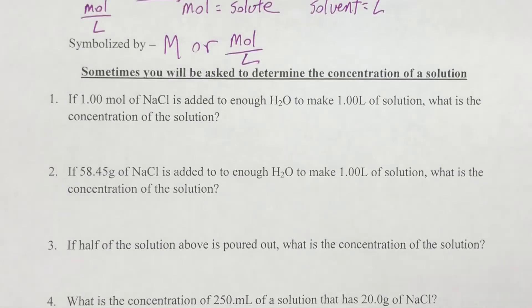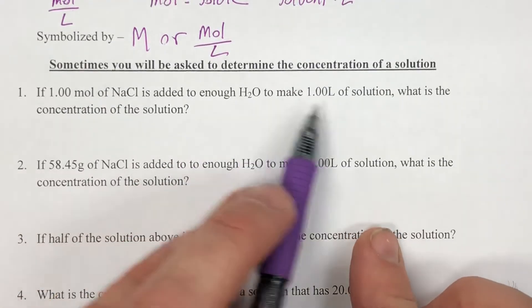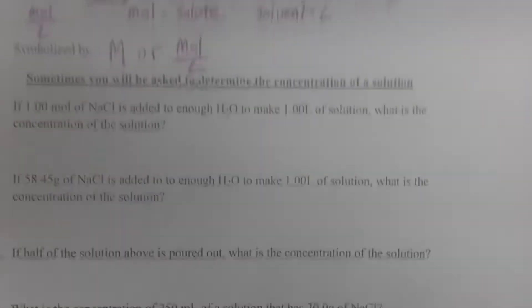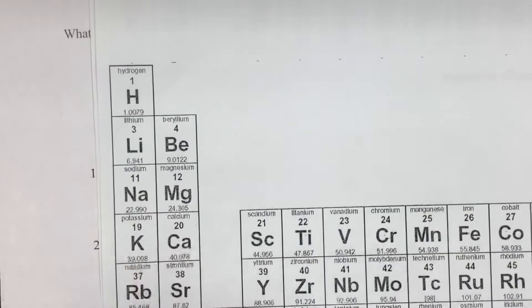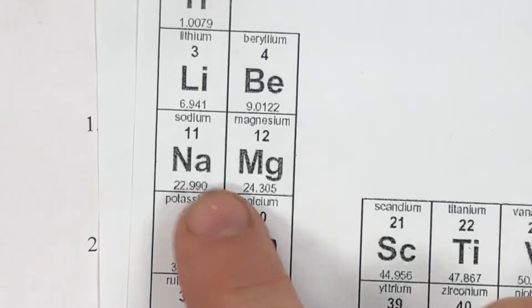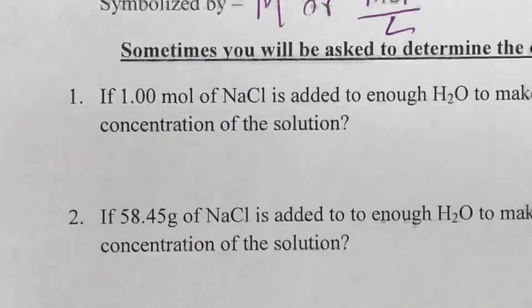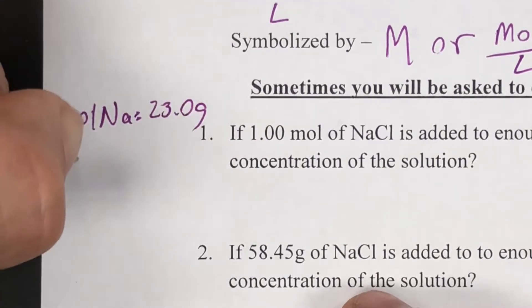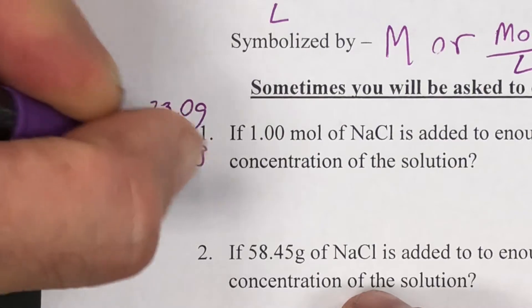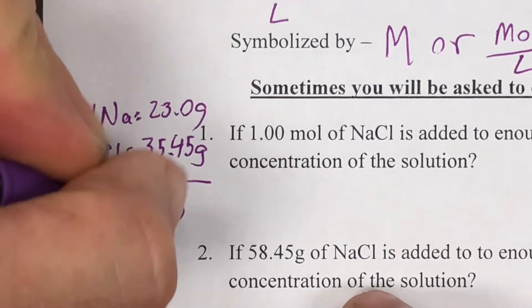We're going to start working some of these out. The first question: one mole of salt, NaCl, is added to enough water to make one liter of solution. What's the concentration? It says one mole to make one liter. How much is a mole of salt? We use the periodic table — sodium rounds to 23 grams per mole, and chlorine rounds to 35.45 grams per mole. So one mole of Na is 23.0 grams and one mole of Cl is 35.45 grams, which means one mole of NaCl equals 58.45 grams.